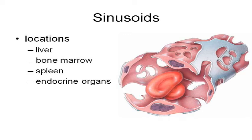One of the jobs of the spleen is to actually remove old red cells. Red cells are only good for about 120 days, and as they begin to wear out, they look different — like worn tires. The spleen can take those out of circulation, eat them, and recycle them. And so again, you need those bigger gaps in the capillaries for that to happen.